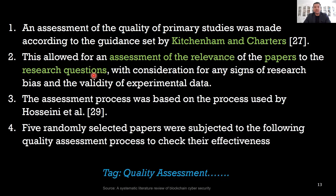There may be a situation where the paper title and abstract give an impression that the paper is relevant, but when you actually try to find information from it to answer your research question, you cannot get that information. In that case, you have to exclude that paper — meaning you have applied quality criteria to help further refine the assessment process.